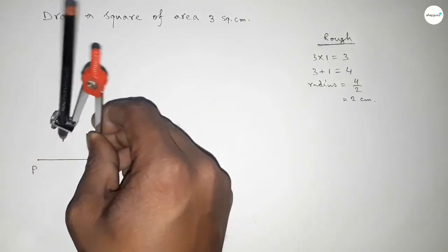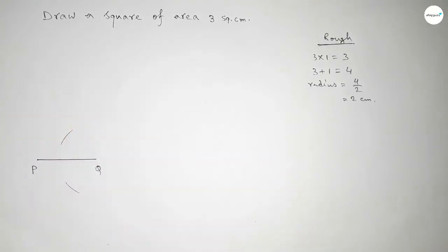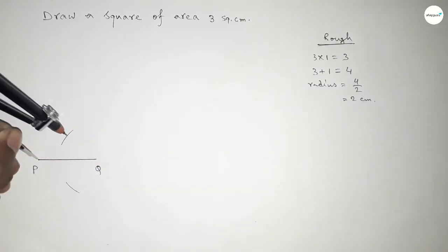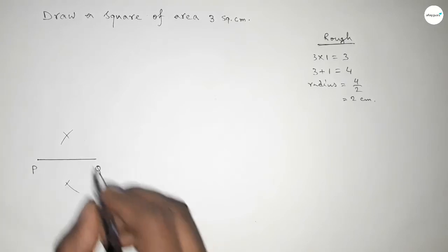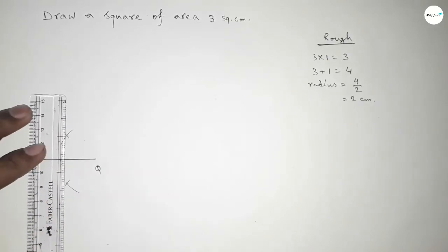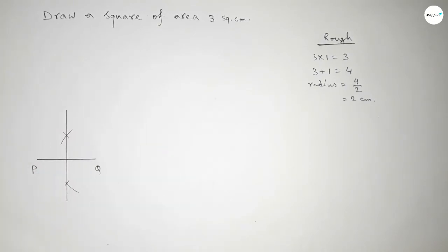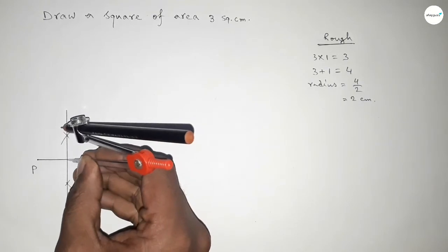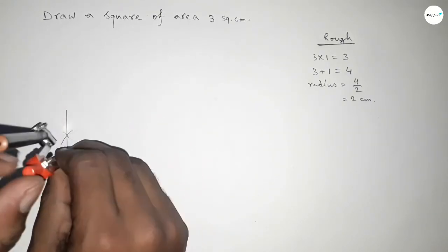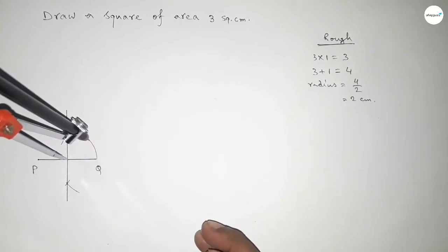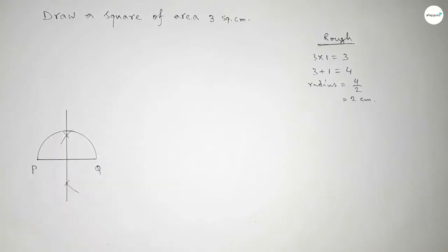Drawing arc here and drawing arc here with the same length, then putting the compass here and cutting here and cutting here, so both curves intersect at two points. Joining this line which bisects PQ at a point O. Now taking the length to draw a semicircle.